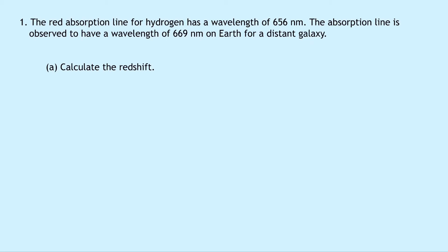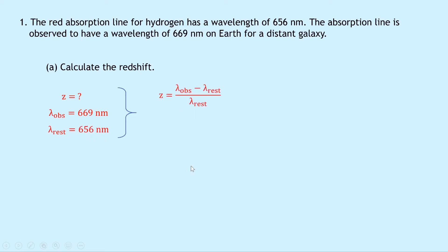Question 1 says that the red absorption line for hydrogen has a wavelength of 656 nanometers. The absorption line is observed at a wavelength of 669 nanometers on Earth for a distant galaxy. Part A says to calculate the redshift. Writing down what we know: the observed wavelength lambda OBS is 669 nanometers, and the rest wavelength lambda rest is 656 nanometers. Our equation is z equals lambda observed minus lambda rest divided by lambda rest. Substituting in: 669 minus 656 divided by 656 gives an answer of 0.02.